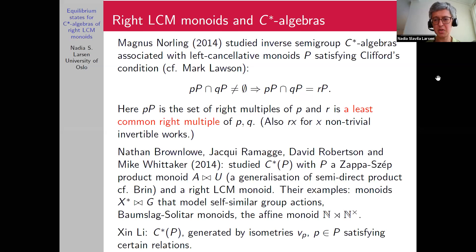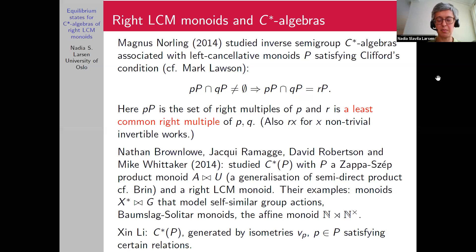Through the right LCM structure, we know C*-algebras of monoids are generated by isometries. The key strength of the right LCM condition is that the only additional structure needed is knowing how to move adjoints past the V_p's. This gives a spanning set for the semigroup C*-algebra of the right LCM monoid consisting simply of elements V_p V_q*, without worrying about additional relations.